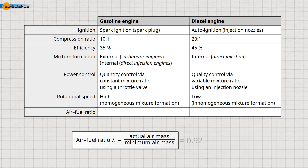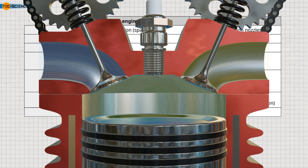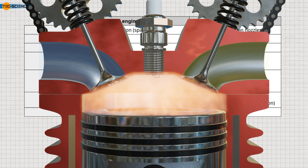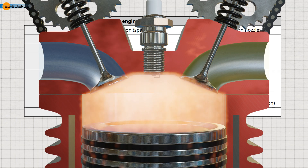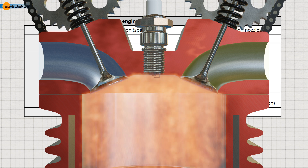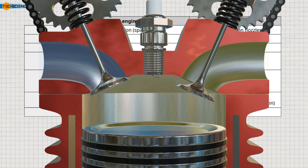A lambda value of 0.92 means that there is 8% less air mass available than required for complete combustion. A lambda value of 1.05 means there is 5% more air in the cylinder than necessary. The air-fuel ratio has a significant effect on combustion speed, which is the speed at which the flame front spreads during combustion, and consequently also affects engine performance.